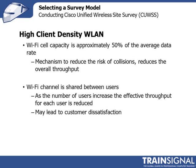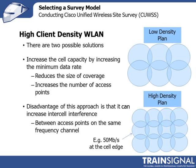Sometimes those data rates can be disappointing for the customer and they say they need higher data rates. The way to resolve that is to deploy more access points so there are fewer users per access point. There are two ways to decrease the coverage of an access point: the first is to increase the minimum data rate, and the second is to reduce the transmit power of the access point.